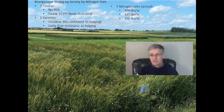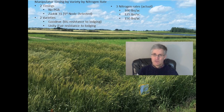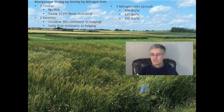Our second experiment, conducted on the same field, looked at the relationship between Manipulator, wheat variety, and nitrogen. We evaluated the impact of Manipulator sprayed at the ideal 3-1 timing and compared varieties with contrasting levels of resistance to lodging. The wheat varieties were Good Eve, rated as having very good resistance, and Unity, rated as having only fair resistance to lodging. These varieties were compared at three nitrogen rates from 100 to 150 pounds of nitrogen.